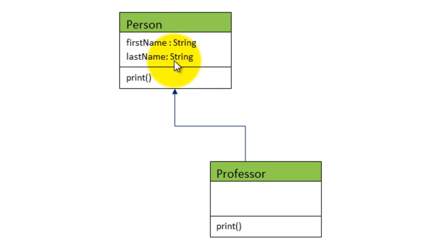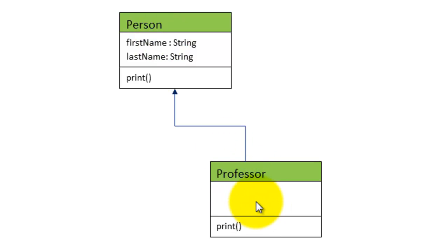When we create an object of Professor, we have access to first name and last name — we don't have to create them again. Professor is called the child class, and Person is called the parent class. We also refer to these as the subclass and the superclass — many different names.